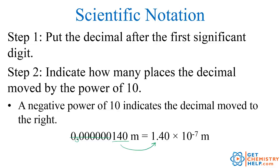I want to move the decimal until it's just after the first significant digit. I'm going to move it 1, 2, 3, 4, 5, 6, 7 times. So that becomes 1.40 times 10 to the negative 7th. It's negative because I moved the decimal to the right.